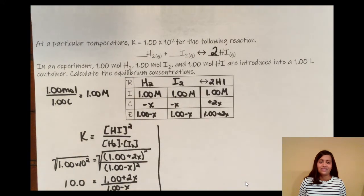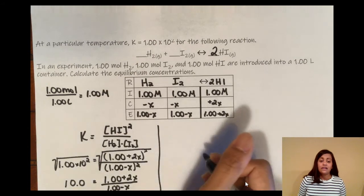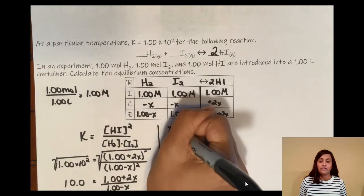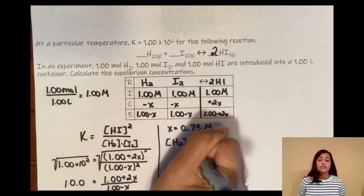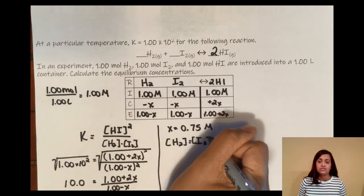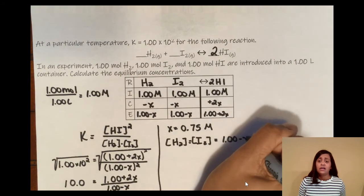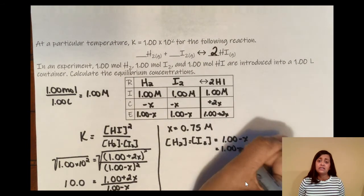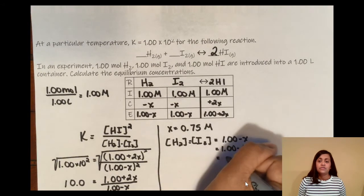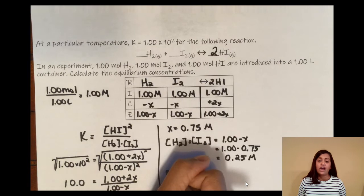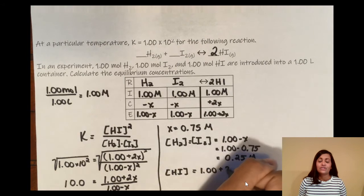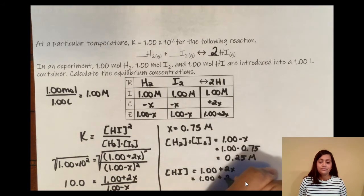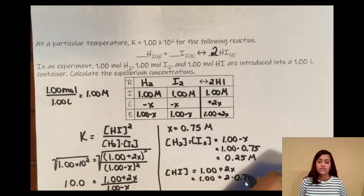With x = 0.75 M, we plug back in. H₂ and I₂ concentrations are equal: 1.00 − x = 1.00 − 0.75 = 0.25 M. Make sure you show all this work for your AP readers. For HI: 1.00 + 2x = 1.00 + 2(0.75) = 2.50 M. Try to do these calculations in your head especially for multiple choice.